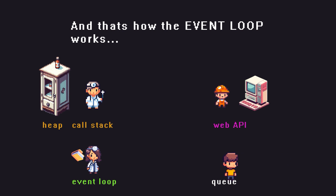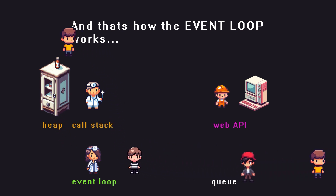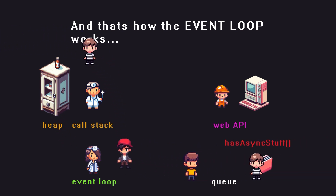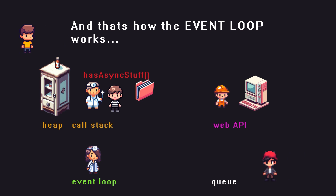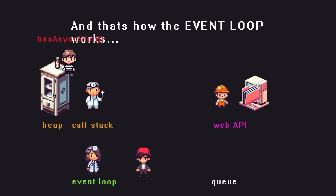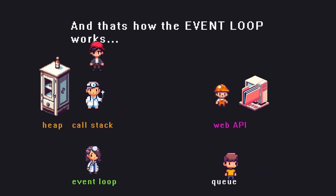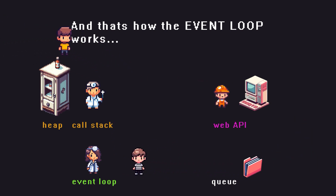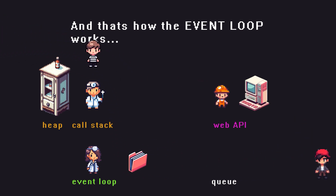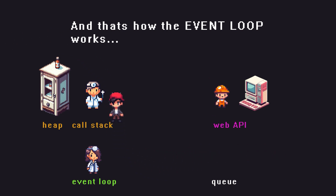In summary, JavaScript executes synchronously on the call stack, while asynchronous actions are managed by the event loop and the callback queue. This non-blocking behavior, enabled by the event loop, allows JavaScript to perform without locking up, making it efficient and scalable.